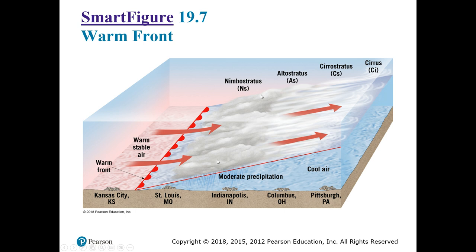We see sheet-like clouds — nimbo meaning rain, stratus meaning a sheet or blanket-like cloud. This is the kind of precipitation where it's just gray and raining all day, not particularly heavy. As the clouds continue moving up in a blanket or sheet fashion, at the very edge we have cirrostratus — very high altitude, almost blanket-like cirrus clouds. And at the very tip, we have cirrus clouds. Consider someone in Pittsburgh, Pennsylvania: as this warm air approaches, they'll first see high cirrus clouds, then cirrostratus, then altostratus — clouds coming lower and lower.